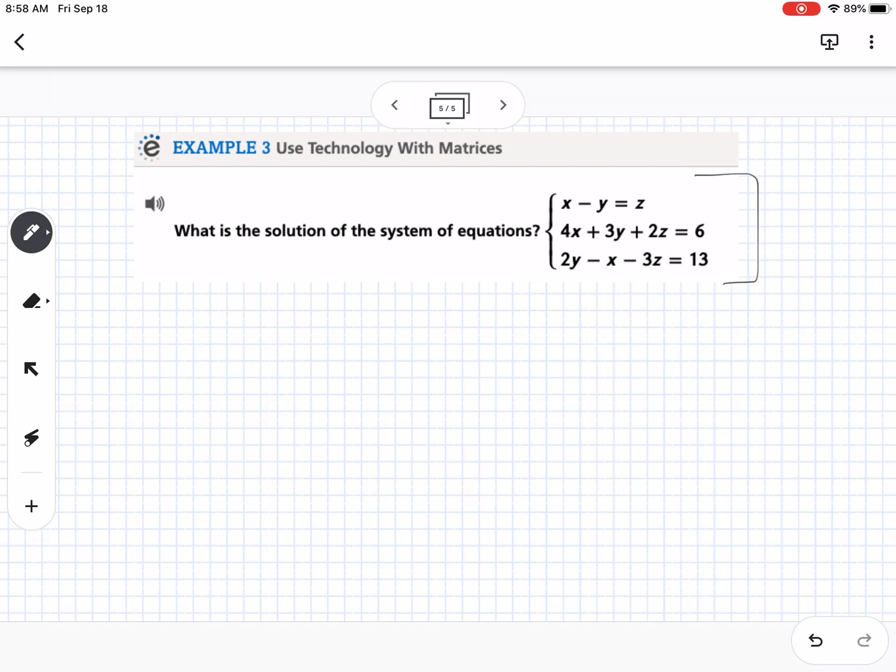What you're going to do first is write it as a matrix. This would be 1, negative 1. I need to subtract the z to the other side because I need all the variables on the same side in the same order. So it would be negative 1, 0. Then I'd have 4, 3, 2, 6. The bottom one's not in the correct order, so I need the x to go first. So it would be negative 1, then 2, then negative 3, and then 13.